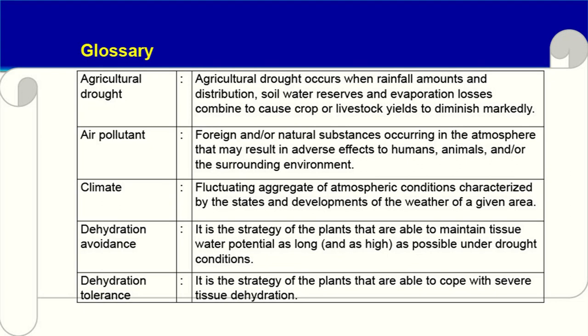Climate: the fluctuating aggregate of atmospheric conditions characterized by the states and development of the weather of a given area. Dehydration avoidance: the strategy of plants that are able to maintain tissue water potential as high as possible under drought conditions. Dehydration tolerance: the strategy of plants that are able to cope with severe tissue dehydration.